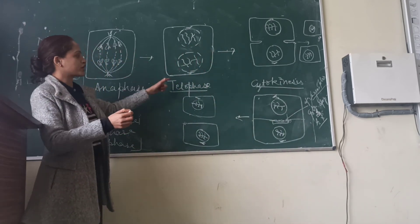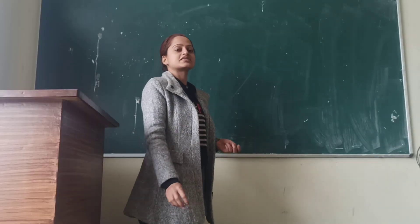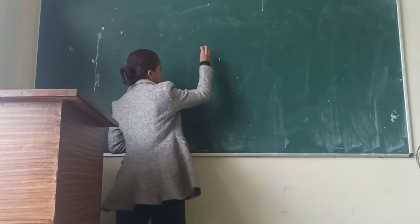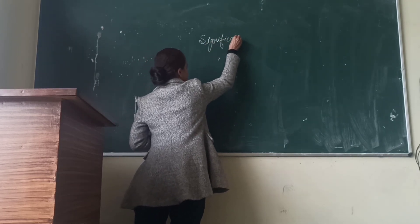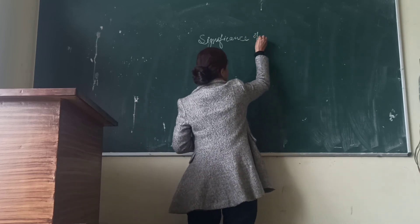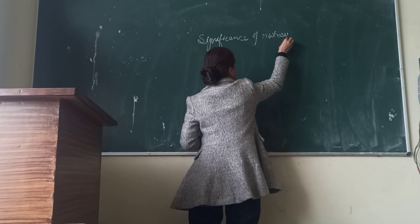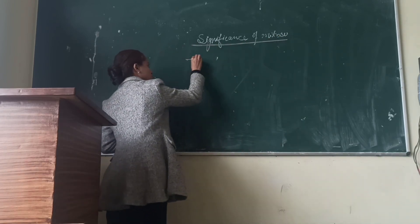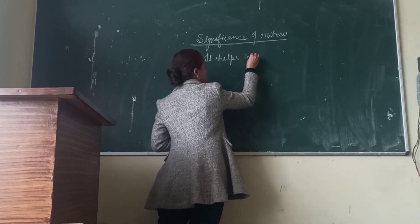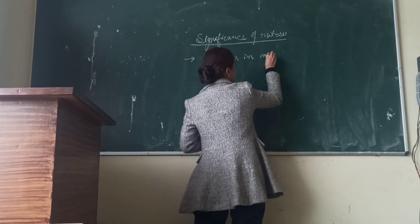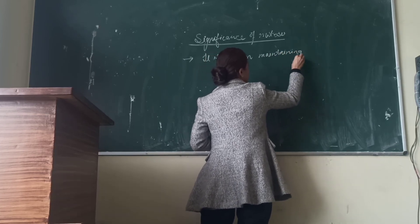This is the complete process of mitosis. Now we discuss the significance of mitosis. First, it helps in maintaining the same chromosome number, as mitosis is equational division — after division, the two daughter cells have the same chromosome number as the parent cell.